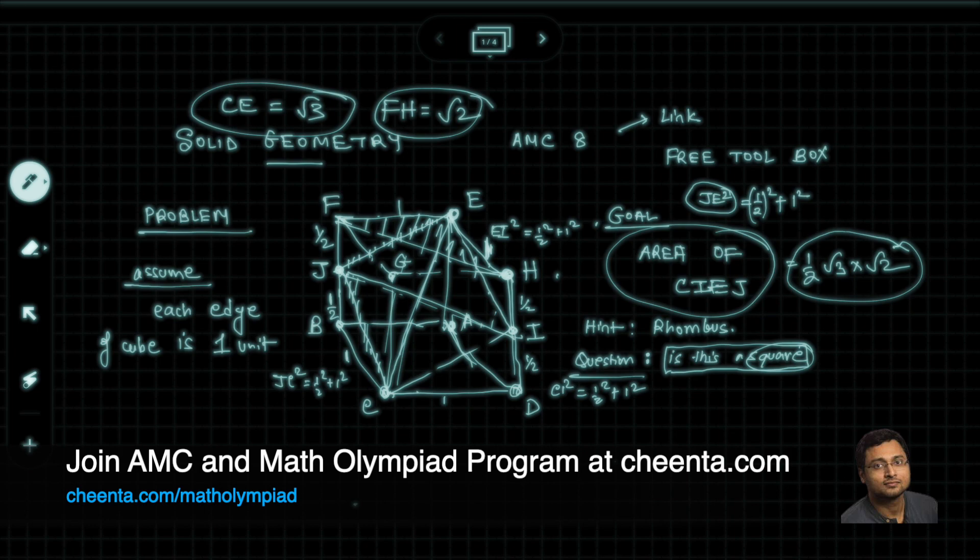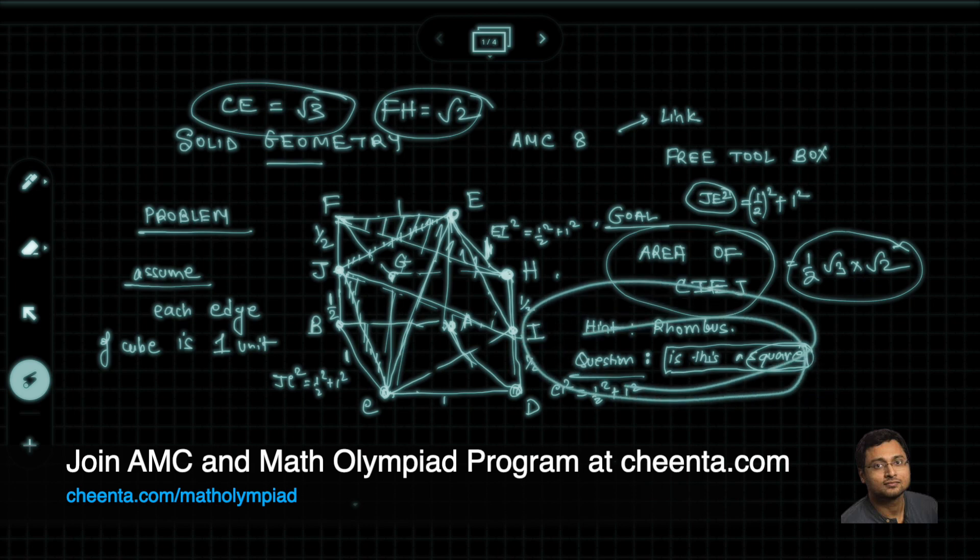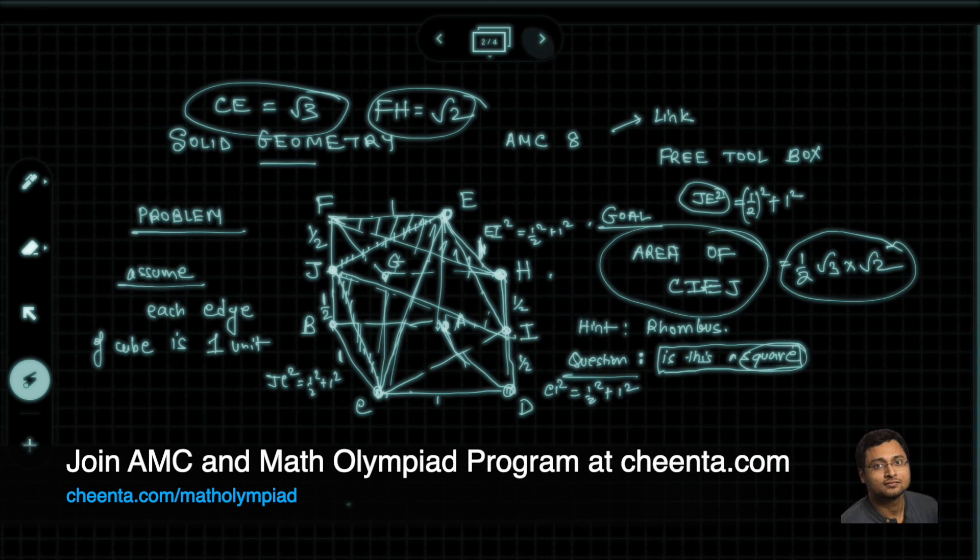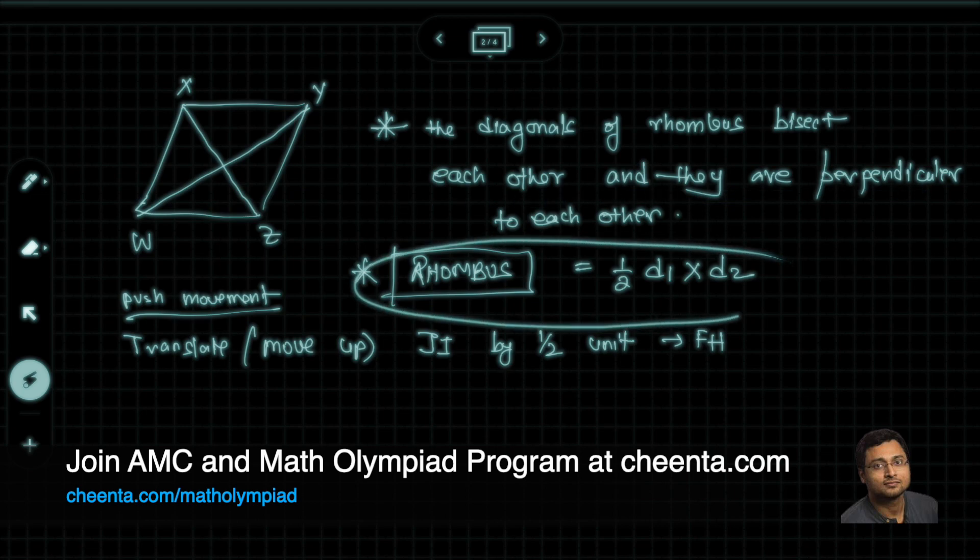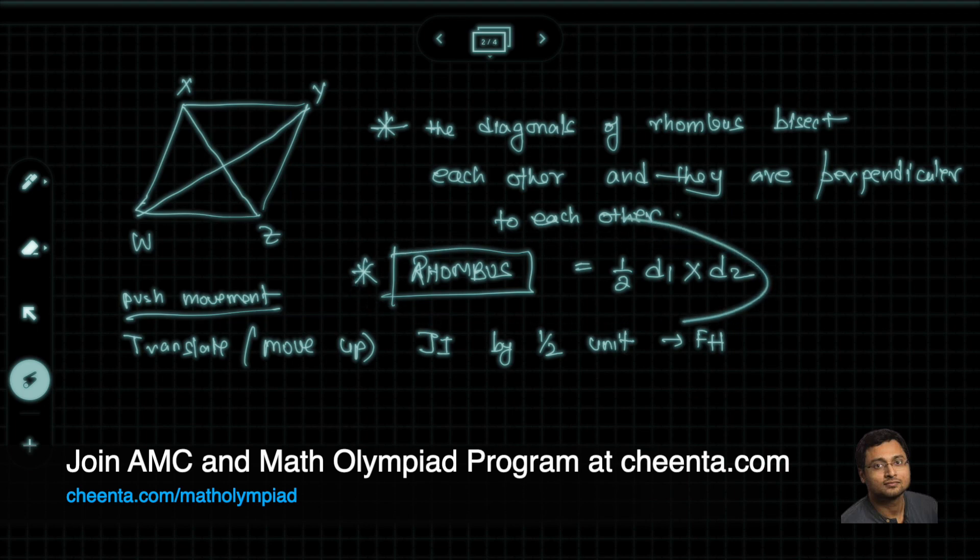Give a comment explaining why this rhombus is or isn't a square, and also give me a reason why this claim about diagonals of a rhombus bisect each other and they're perpendicular to each other is true, and how can we deduce from there that this is the area formula of a rhombus. I'll see you in the next one. Keep on doing great mathematics.